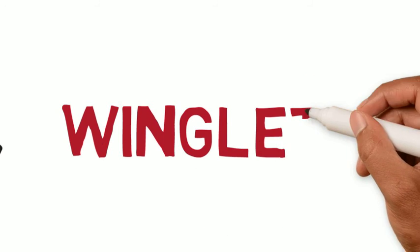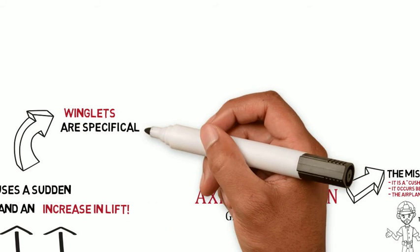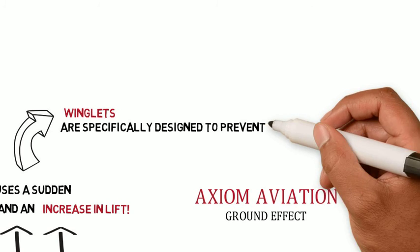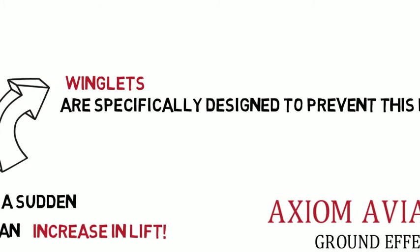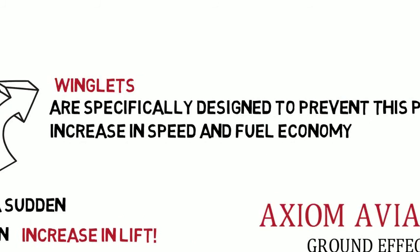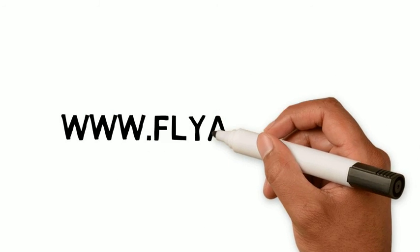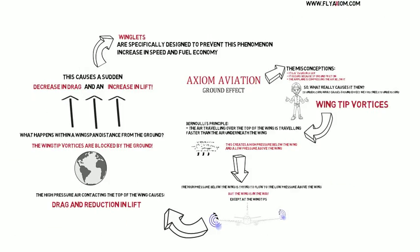They actually developed what are called winglets to combat this phenomenon. On jets you can see them — they're the part of the wing that sticks up vertically at the end of the wing. That blocks the wing tip vortices and increases speed and fuel efficiency. Check us out and see more at flyaxiom.com. We'll see you next time.